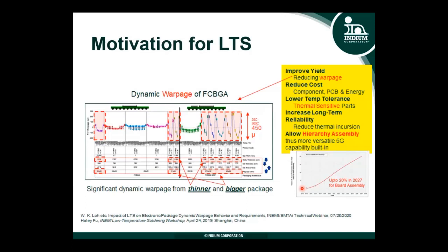Number two is reducing cost, because at low temperature you don't need very high thermal stability. Number three is that some components are not tolerant to high temperature, therefore you need lower temperature for effective functioning of those components. Also, with low temperature you don't have as much thermal damage during the process, giving better long-term reliability. The last driver is that lower temperature allows hierarchy assembly of devices — particularly important for complicated devices such as 5G smartphones.